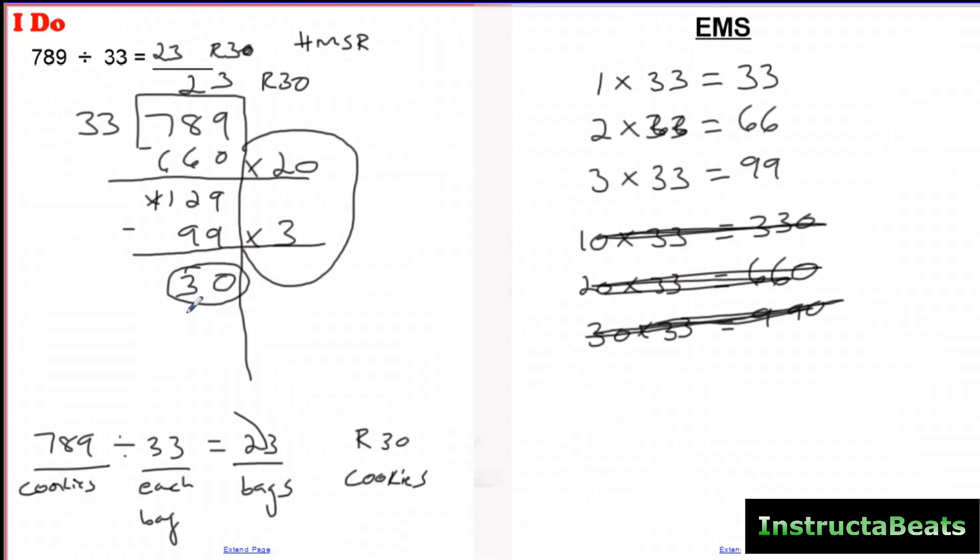So it's okay if your remainder is bigger than your quotient. It's not okay if your remainder is bigger than your divisor. Okay, if this is bigger than 33, that means I could take another group of 33 out. Such a misconception I just want to quickly address. Let's take a look at a We Do problem.